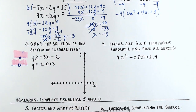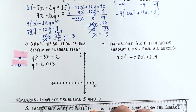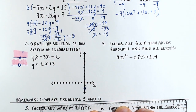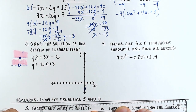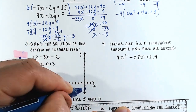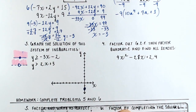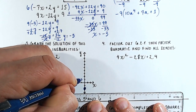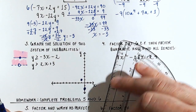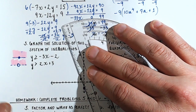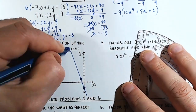Now let's plot these points. I'll plot the top inequality in blue. My y-intercept is negative 2, so I circle a point there. My slope is negative 3 over 1, so fall 3 run 1. I can go up 3 and to the left 1 to plot another point at negative 1, 1. Then I draw in a solid line because it was greater than or equal to.